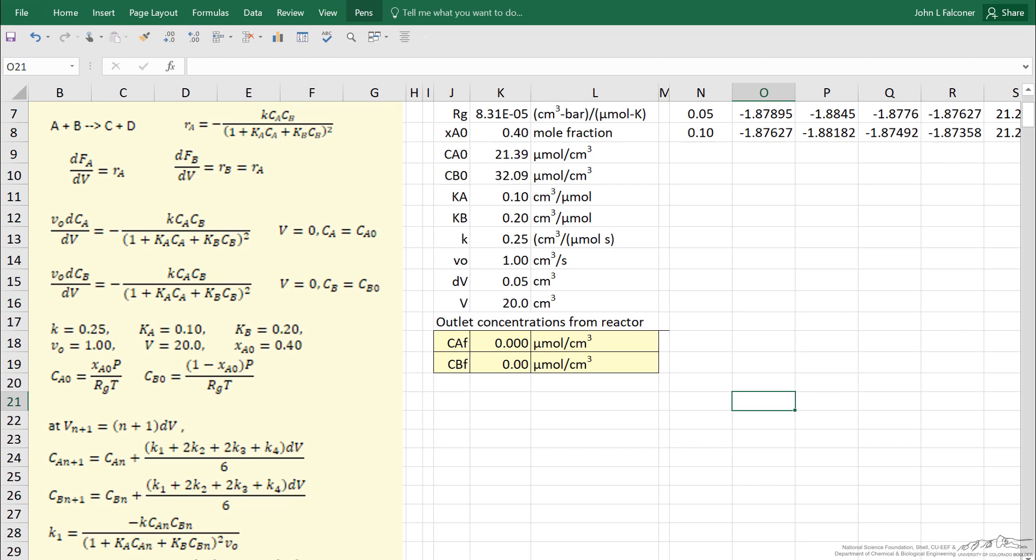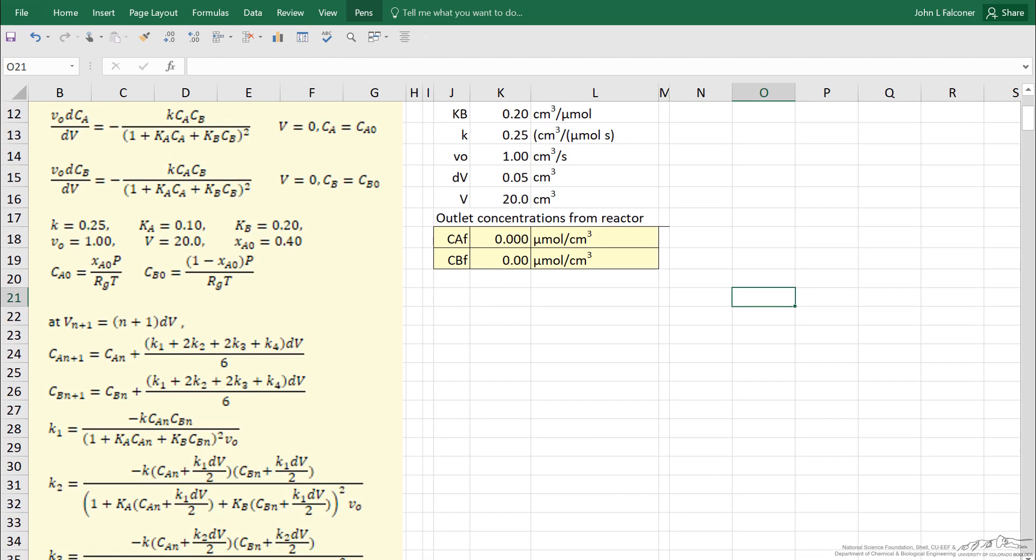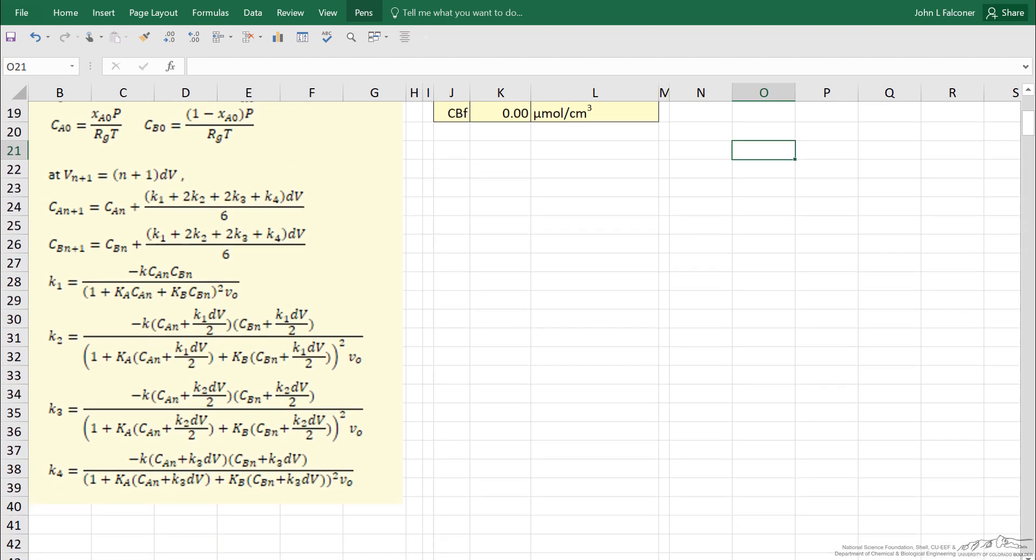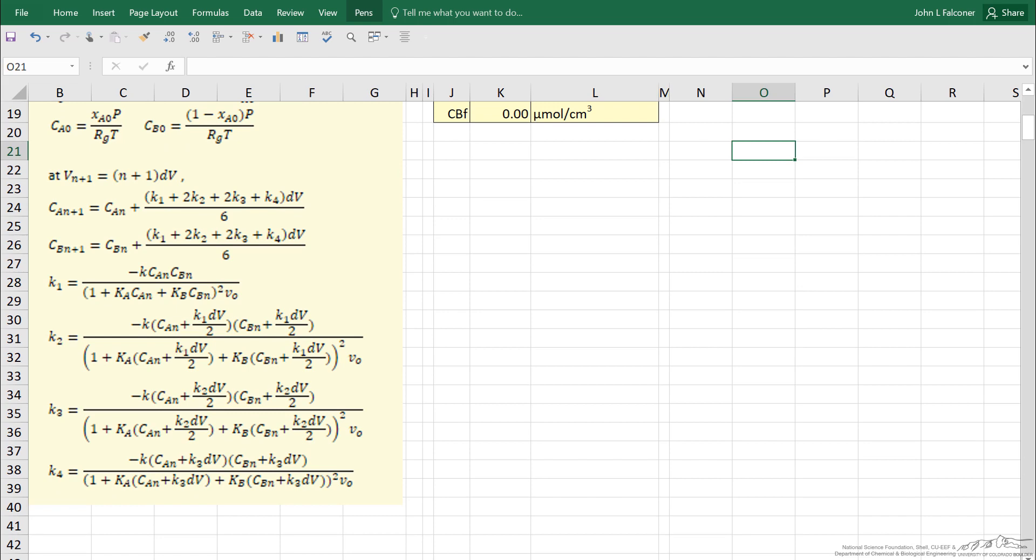Now the approach to solve these is to step along, take small steps, and calculate the differential as a difference. We're going to calculate the concentration at step n+1 as the concentration of the previous step plus this term that has K1, K2, K3, and K4 in it. And K1, K2, K3, and K4 are shown here.